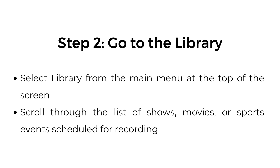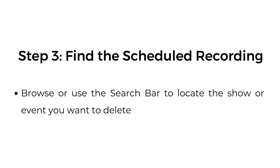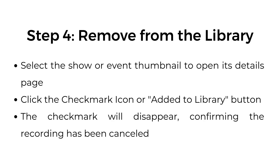Scroll through the list of shows, movies, or sports events scheduled for recording. Step 3: Find the scheduled recording. Browse or use the search bar to locate the show or event you want to delete. Step 4: Remove from the library. Select the show or event thumbnail to open its details page. Click the check mark icon or Add to Library button. The check mark will disappear, confirming the recording has been cancelled.